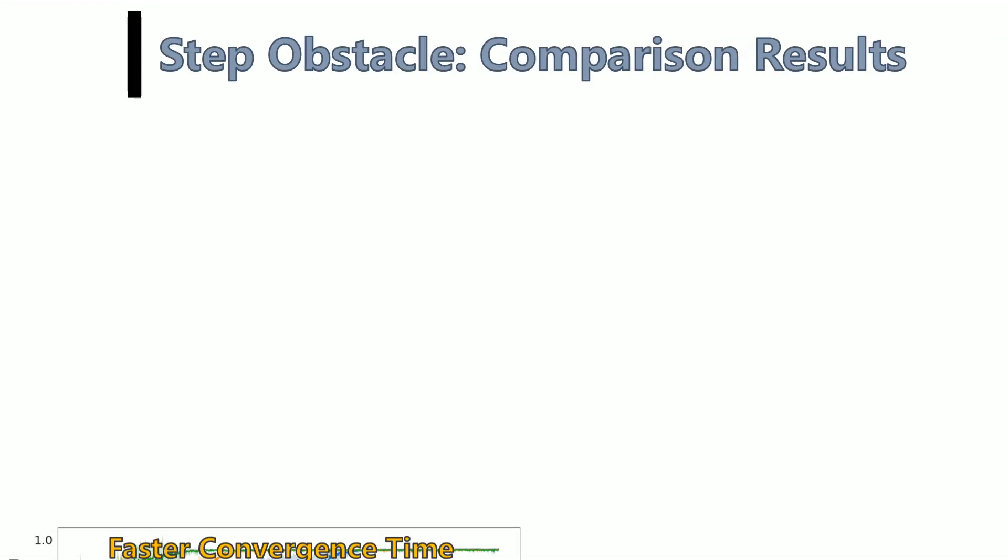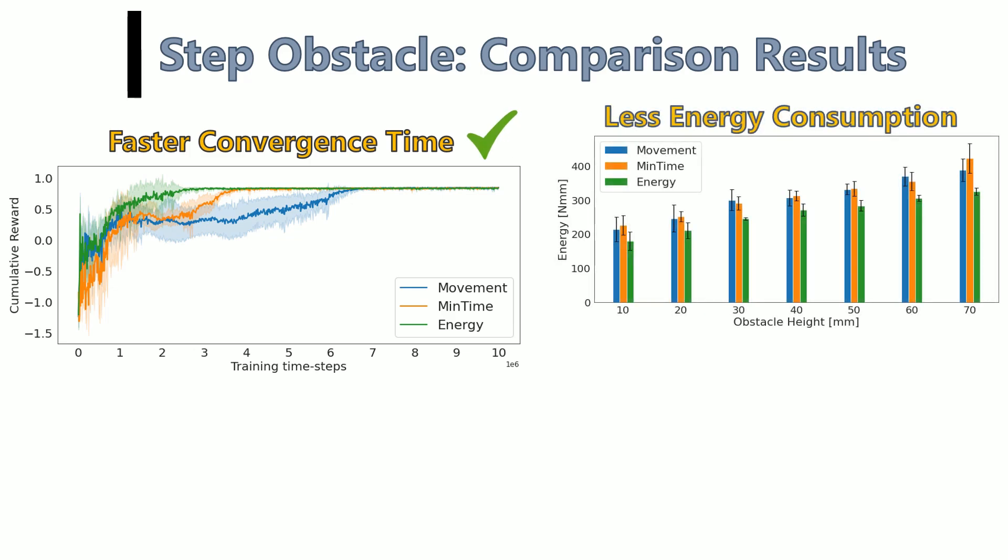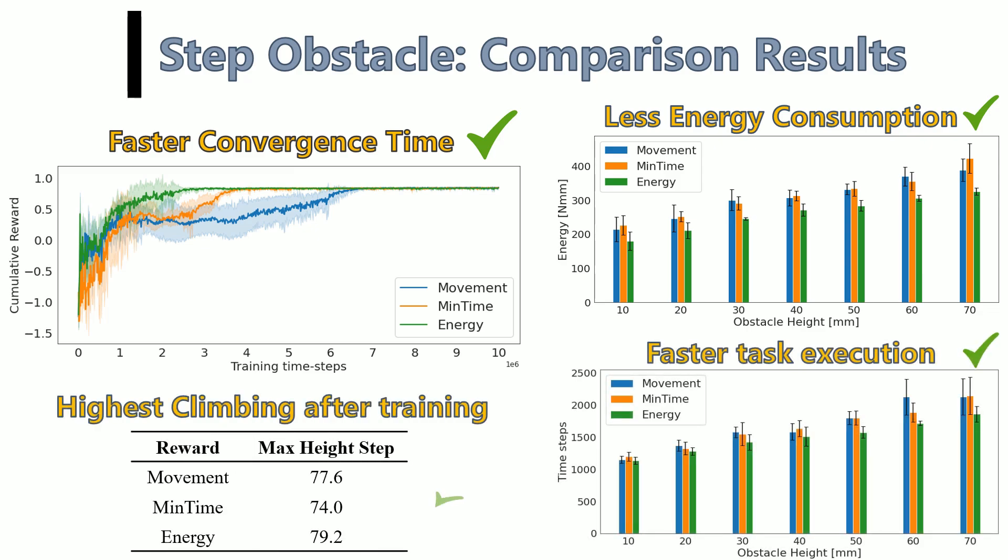We compared the energy-based reward function with two alternatives, a movement-based and a minimum-time-based reward function. The results show that the energy-based reward produced superior results in terms of convergence time, energy consumption, execution time, and obstacle height.